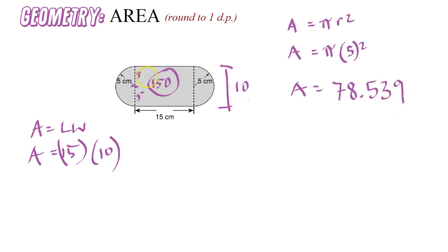It's a full circle—a half circle and a half circle—so we can leave it like that. The full circle is 78.539 centimeters squared. We have to round it to one decimal place.